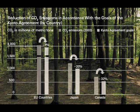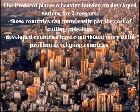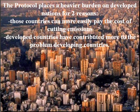Based on carbon dioxide emission levels of 2003, European Union nations must cut emissions by another 7%, Japan by 20%, and Canada by 32% in order to fulfill the stipulations of the Climate Protection Agreement. The Protocol places a heavier burden on developed nations.